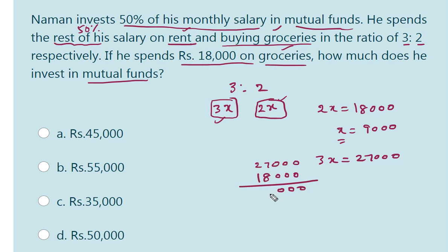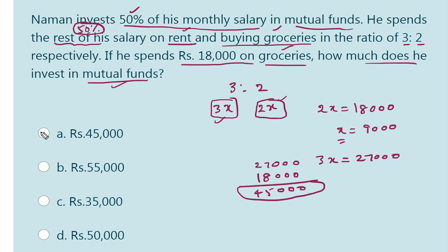Rent 27,000 plus buying groceries 18,000 gives us 45,000. So that remaining 50% is 45,000. Since the other 50% is equal to this, another 45,000 is invested in mutual funds.